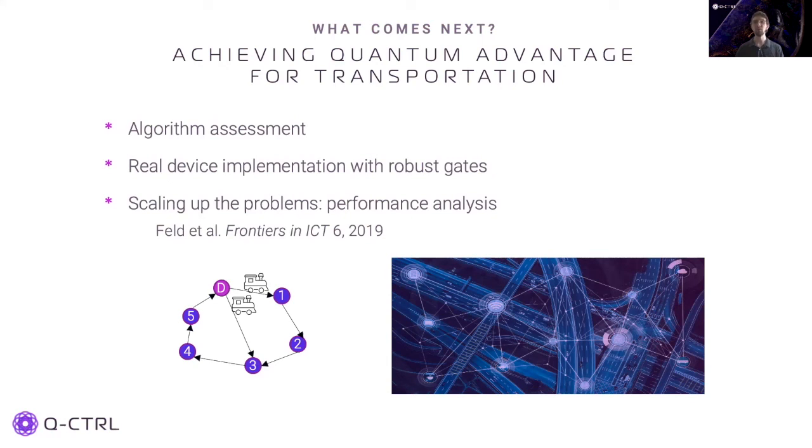As the number of available qubits grows and the circuit performance improves, we will be able to optimize larger transport networks. As the size and complexity of the transport problems grow, we will have a clearer understanding of the relative performance of quantum and classical algorithms or a hybrid approach, as in the paper shown, and we will have a clearer understanding of the best paths or problems for obtaining quantum advantage. Thank you for watching this presentation from Q-Control. If you have any questions, you can reach out to the team by going to Q-Control.com.